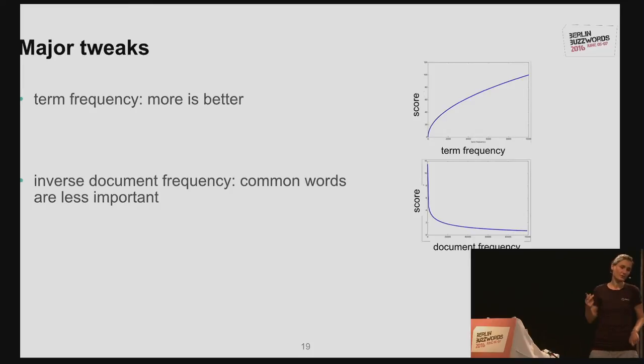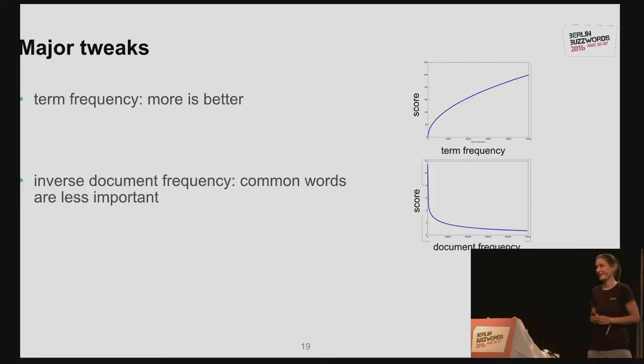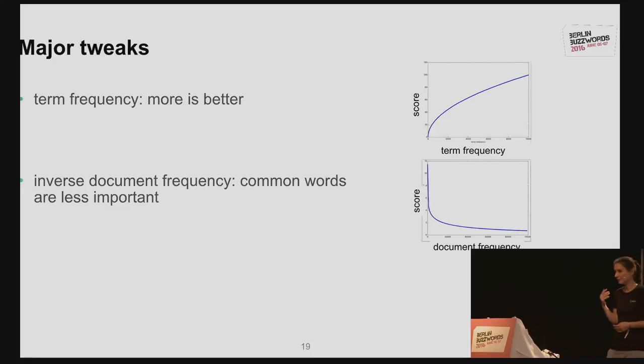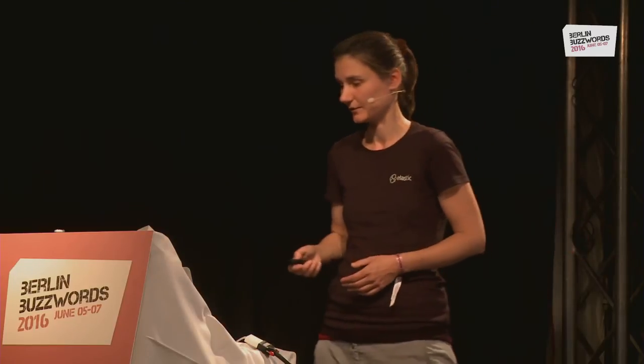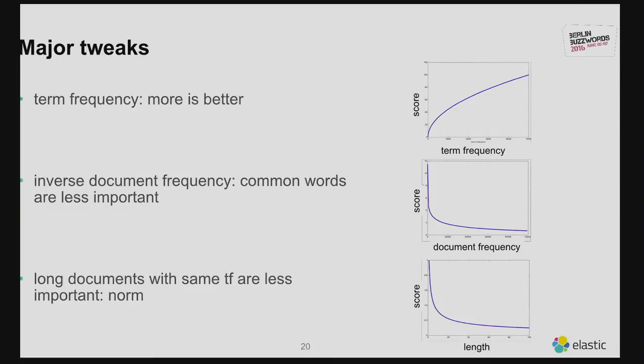The third tweak is document length normalization. Imagine a tweet that matches well and has a certain term frequency, versus a book with the same term frequency. The tweet is probably about that term, whereas a book with a thousand pages where the term only occurs five times is maybe about something completely different. So TF-IDF also uses the length of the document — the more terms in the document, the less relevant it's considered. In Lucene it's one divided by the square root of the length: shorter documents score higher, longer ones score lower.